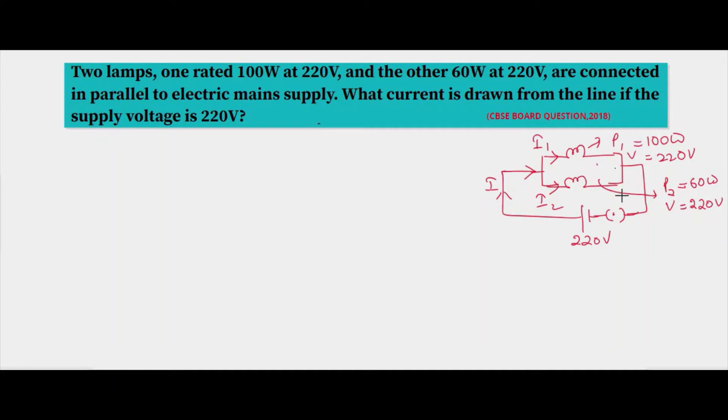So the total current is the sum of the individual currents flowing through each branch. In order to get the total current I, we have to add the current through the two branches. Now we have power and voltage, so the equation we will use is P equals VI.